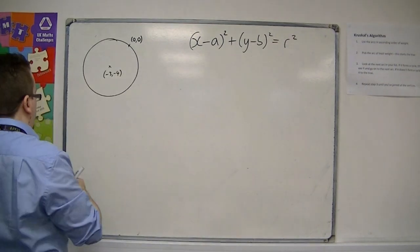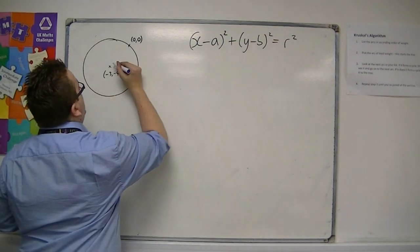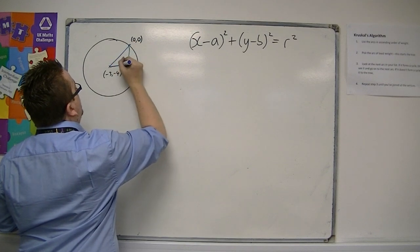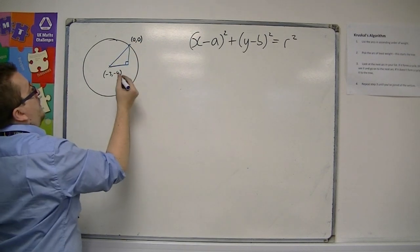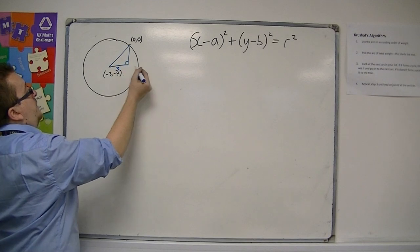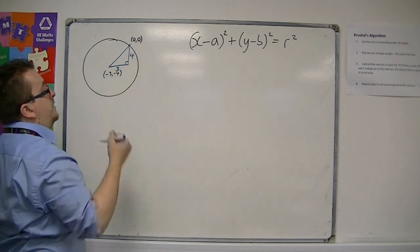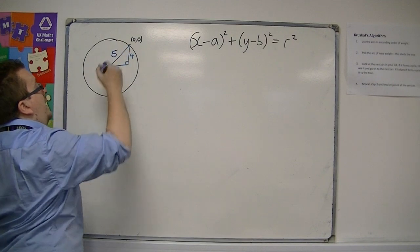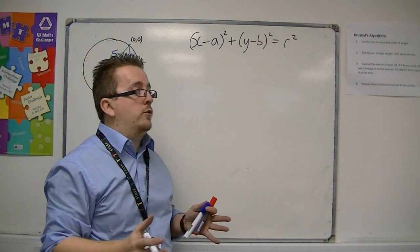So if I have two points, I am able to find the distance between them using Pythagoras. So we have a base length of 3 and a height of 4, so the radius is of length 5, using Pythagoras.